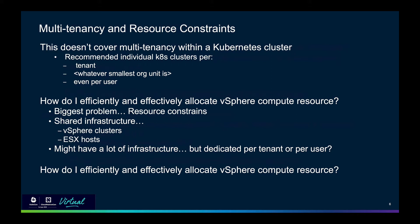What this presentation covers is how to efficiently and effectively allocate vSphere compute resources. The biggest problem with physical infrastructure is constrained resources — you don't have an unlimited number of hosts or servers in your data center. Because of resource constraints, you have shared infrastructure: vSphere clusters and ESX hosts shared among many users, organizations, and business units. Even organizations with thousands of ESX hosts face scaling problems if they try to dedicate clusters to individual users.